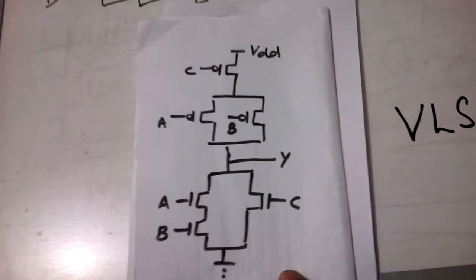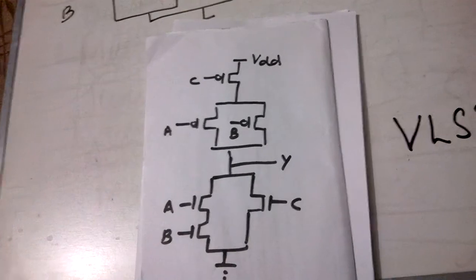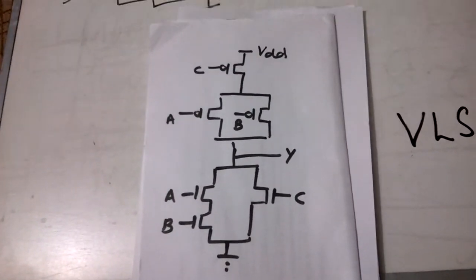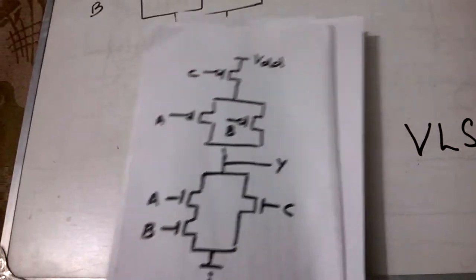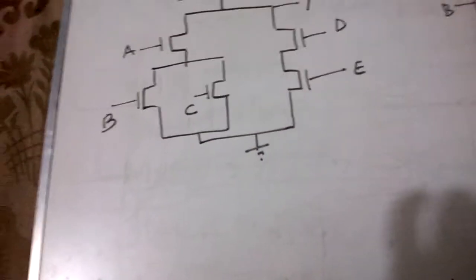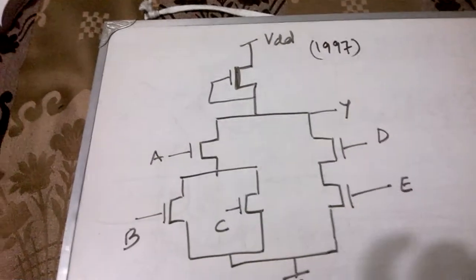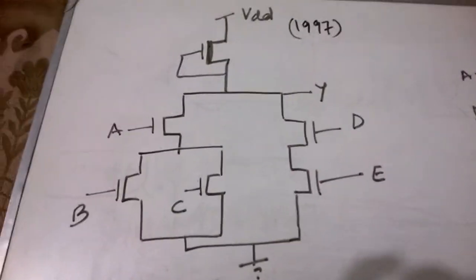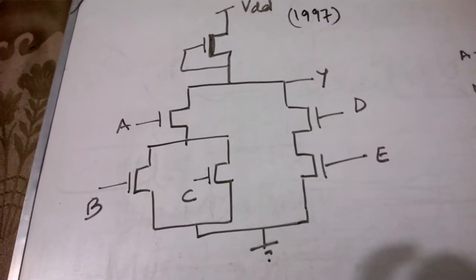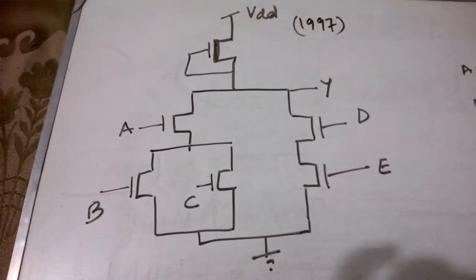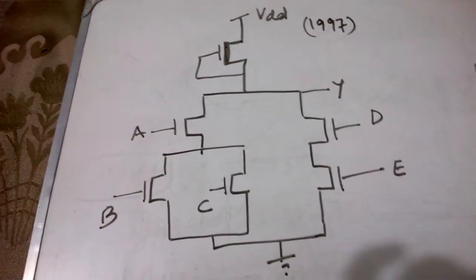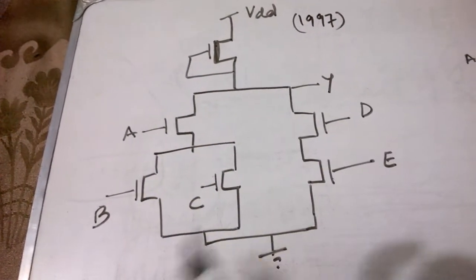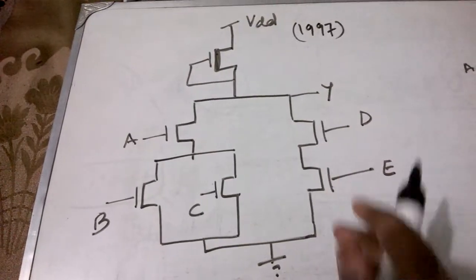Now let us discuss some questions based on this concept which were asked in previous years in the GATE exam. Every year this concept is asked in GATE exam. This particular example was asked in 1997. This structure was given to you and you had to predict that what will be the value of the output Y. How we can find out the value of Y here? Which structure is this? You can see since depletion type NMOS is used this is the NMOS structure.